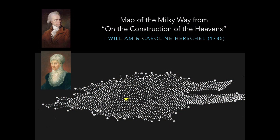The presence of dust was noticed fairly early in the history of our knowledge of the Milky Way. This is a map made by William and Caroline Herschel, astronomers in the 1700s who assumed you could see the most distant star in the Milky Way. If you found the faintest star in each direction, you'd be seeing to the edge of the galaxy. However, when you do that and try to make a map, you get something that looks nothing like a galaxy — with big divots and patches — because there's dust in the way, and you can't see to the other side of the galaxy in visible light in some directions.